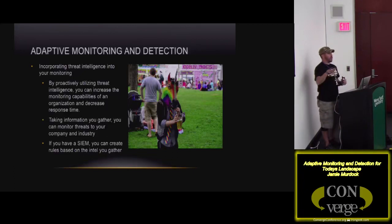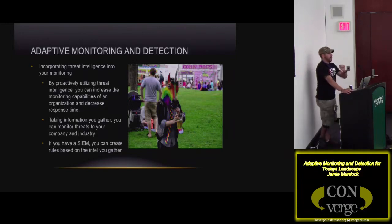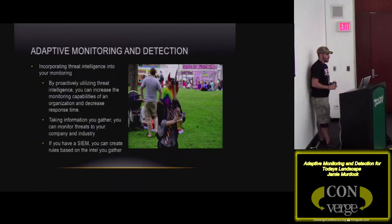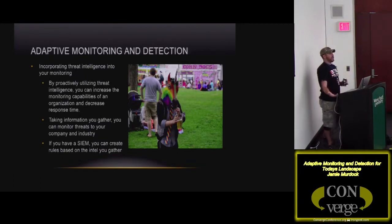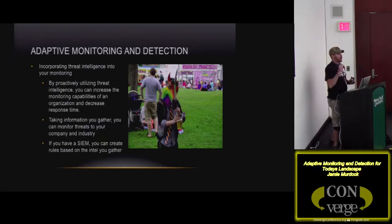For example, there's an organization that is focusing on manufacturing — specifically automotive, since we're here in the Detroit area. That's something we need to know. We need to start tracking whoever's making these claims, see what else they've done in the past, who have they hit before, how did they hit them — and then start focusing on putting content in there to actually monitor for that. Taking the information you gather, you can monitor threats in your company and industry. If bad hacker group X has made claims against your industry or company and they have a history of using a specific exploit or phishing attack, start looking for that and create content on that.